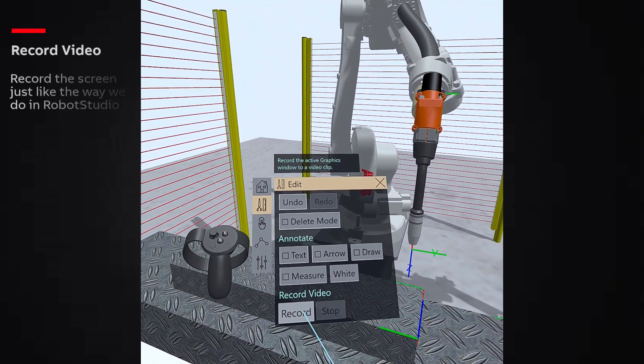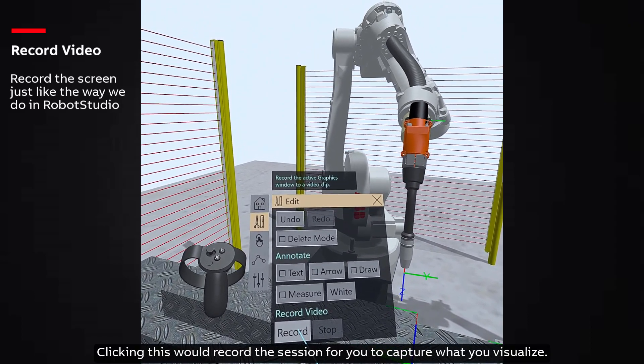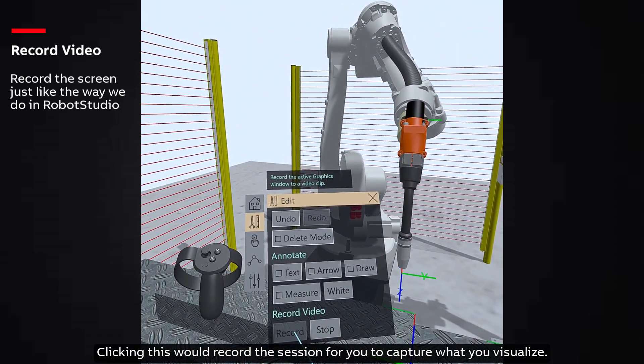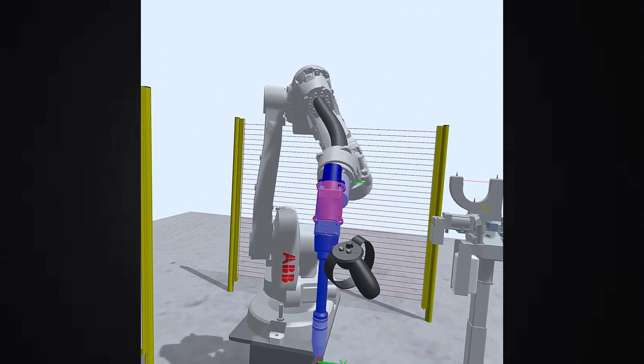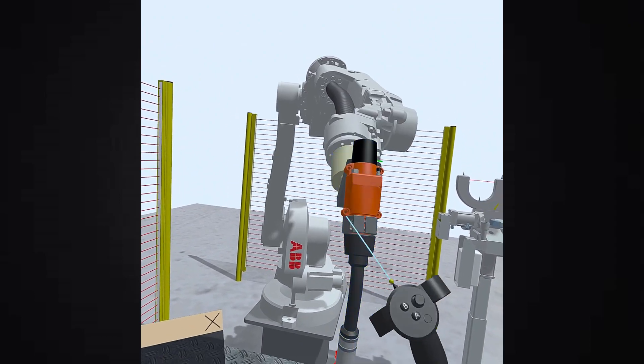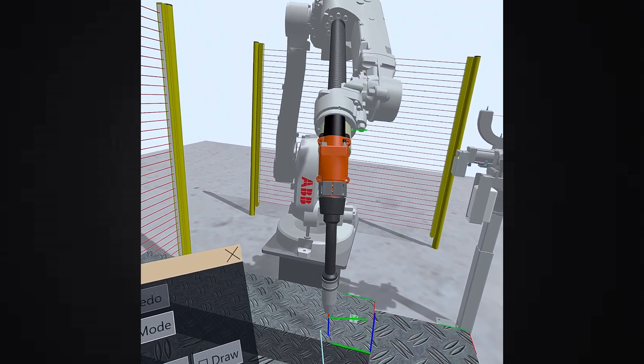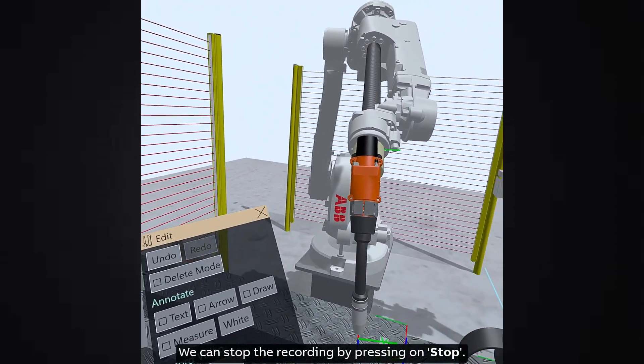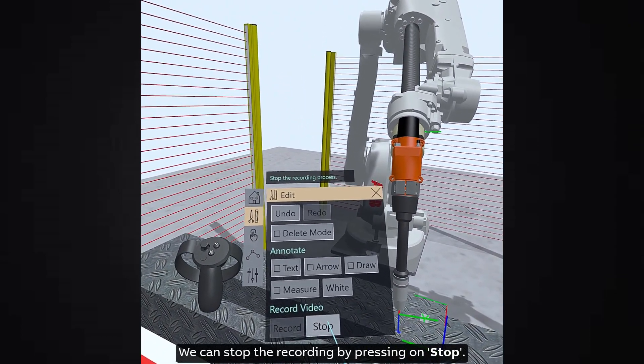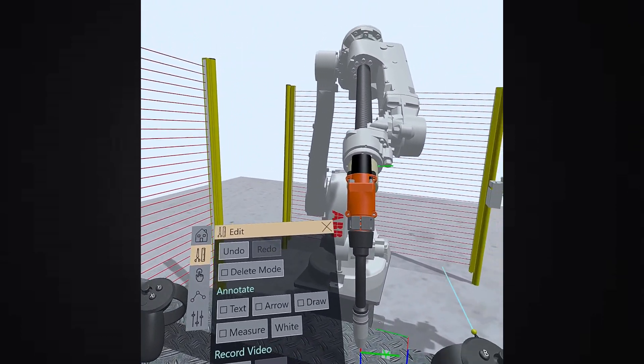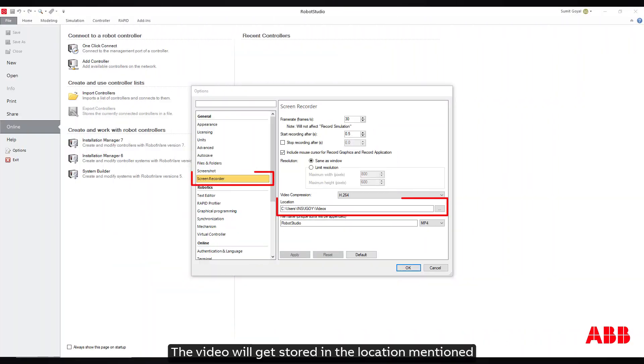Next is record. Clicking this would record the session for you to capture what you visualize. We can stop the recording by pressing on stop. The video will get stored in the location mentioned under the robot studio screen recorder options. Let's see what we recorded.